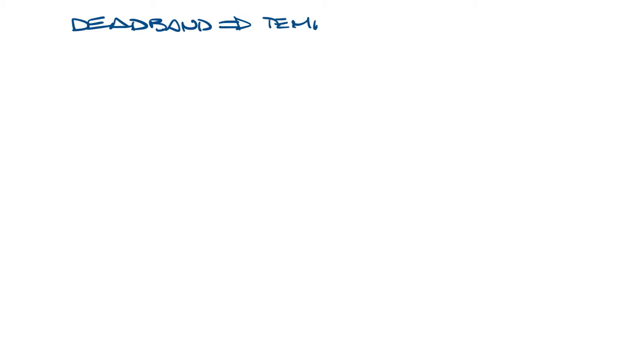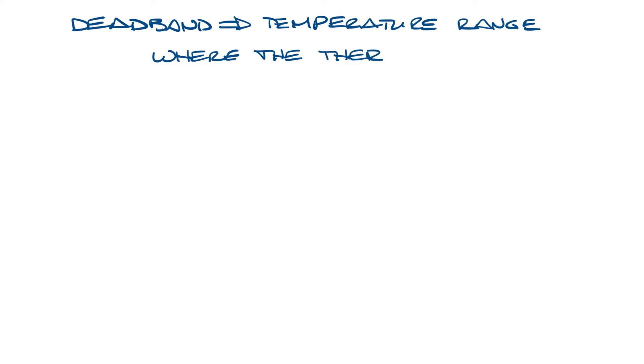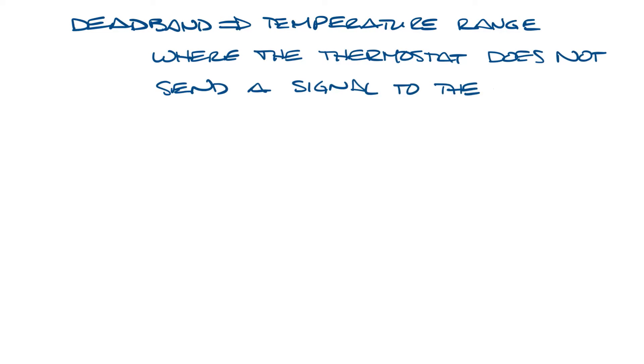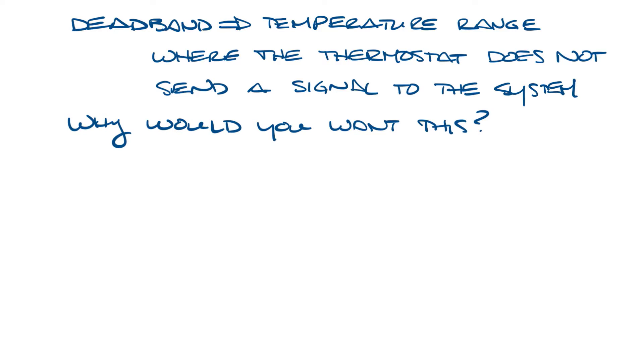The deadband is basically a temperature range in which the thermostat won't send a signal to the system. Let's look at why we would want a deadband.